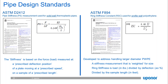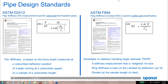Pipe stiffness is based on a force load measured at a prescribed deflection position of a plate moving at a prescribed speed on a sample of prescribed length. Ring stiffness constant is weighted for size—a load in pounds divided by deflection as a percent, divided by sample length in feet. There is a slight nuance between the two, but for solid wall we have pipe stiffness PS, and for structural profile wall we have ring stiffness constant RSC, as defined by their respective ASTM standards.